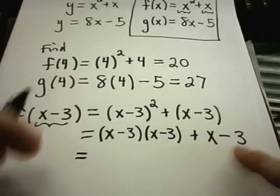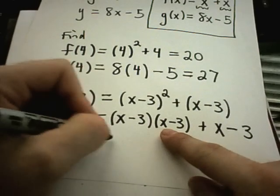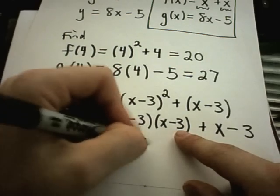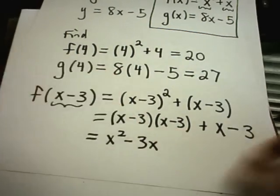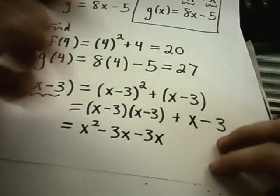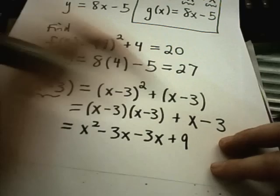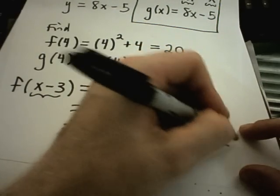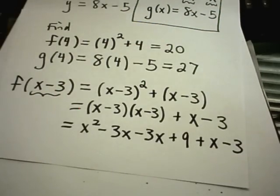So again, if I multiply x times x I'll get x squared. If I do on the outside I'll get a minus 3x. On the inside I'll get another minus 3x. Negative 3 times negative 3 is positive 9. I still have my original x minus 3 hanging out.